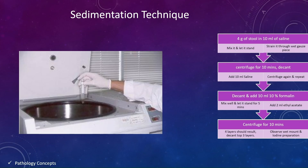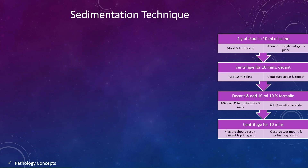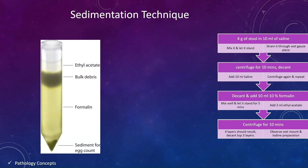Centrifuge for 10 minutes. After centrifugation, 4 layers should be developed. Decant the top 3 layers and observe the wet mount and iodine preparation from the sediment. The uppermost layer is ethyl acetate, then the layer of debris, then the layer of formalin, and lastly the layer of sediment.